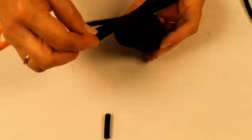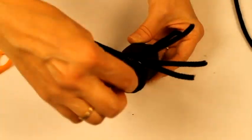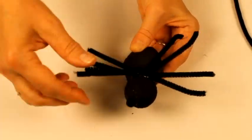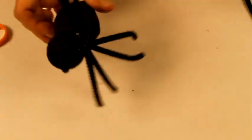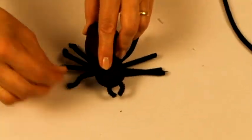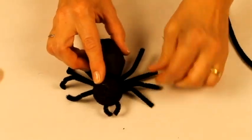Take two small pieces of pipe cleaner that you insert in front of the styrofoam ball to form the mandibules of the spider. Bend the pipe cleaners to give them a characteristic shape of spider legs.